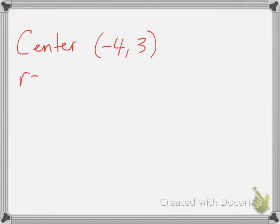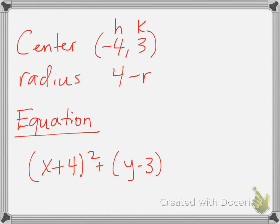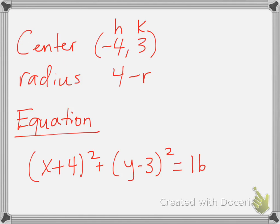We can do the opposite and be given the information, then plug it into our equation. So if h is negative 4, when we plug it in, it becomes positive 4. And since y is positive 3, when we plug it in, it becomes negative 3. Then we take 4 and square it, which gives us 16.